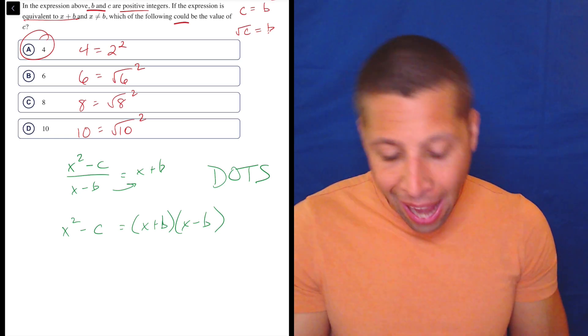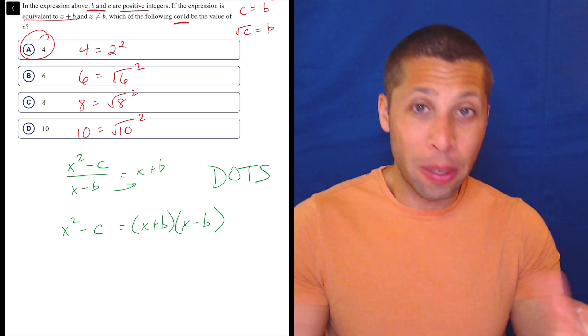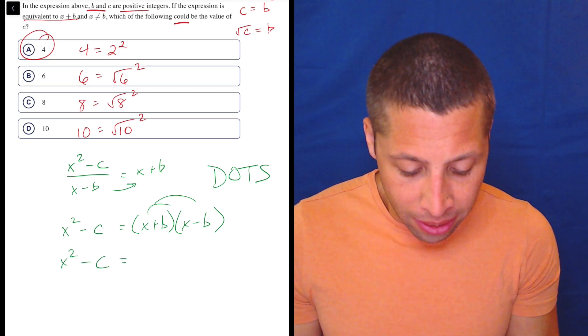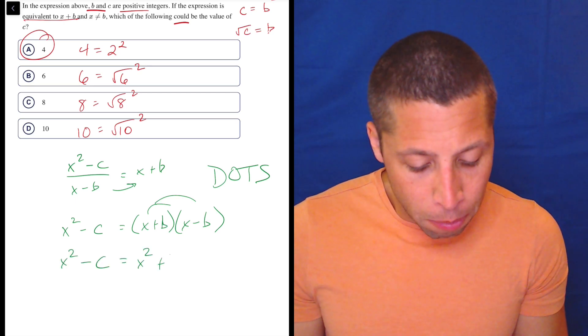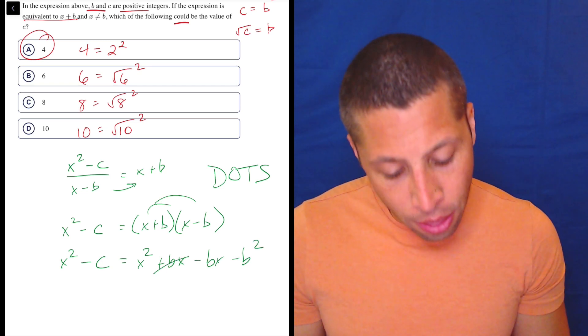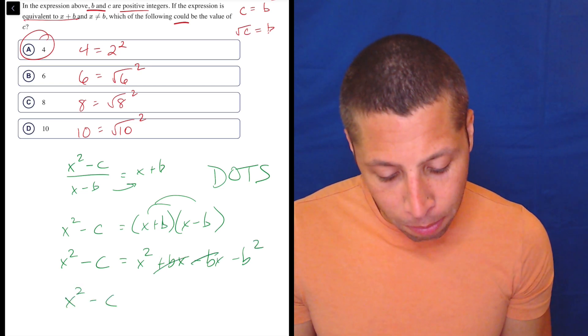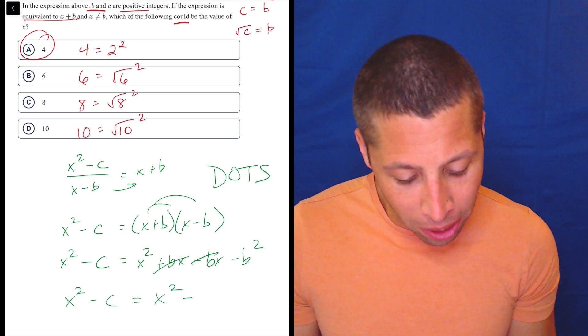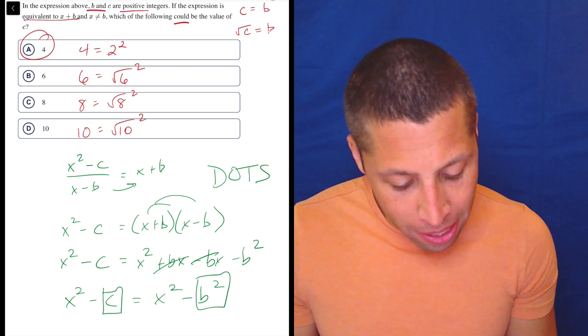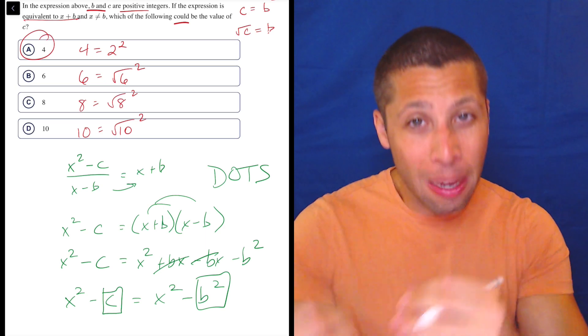So x plus B times x minus B. If we factored the x squared minus C, we would need to kind of to be a square root situation there. Or you can kind of foil this out. x squared minus C is equal to x squared plus Bx minus Bx minus B squared. These cancel. x squared minus C is equal to x squared minus B squared. And now we kind of end up in the same place where C and B squared are representing the same term.